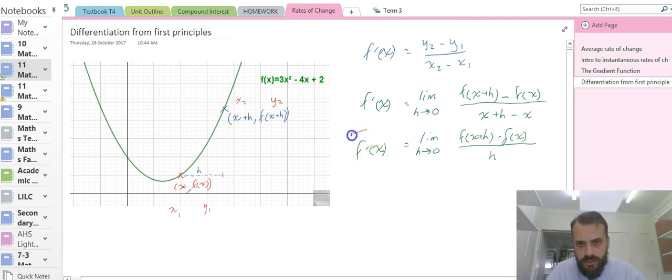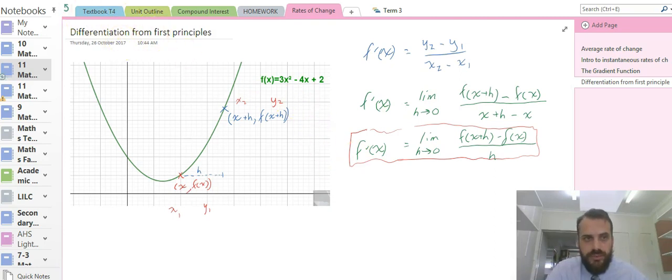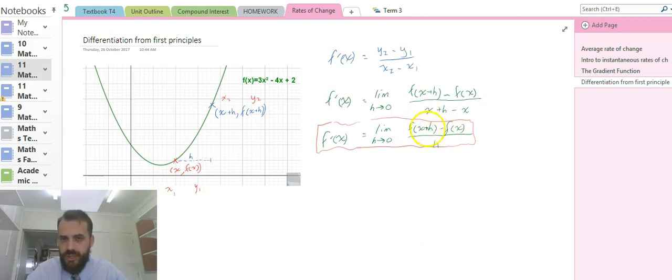This formula is really where the action starts. That formula is how you differentiate via first principles, differentiation from first principles. So we've got f(x + h), that means we're putting x + h into f(x). So another line here: f'(x) equals the limit as h approaches 0 of, and this is where the working gets really big, f(x + h) is x + h put in here. So it's 3(x + h)² - 4(x + h) + 2.